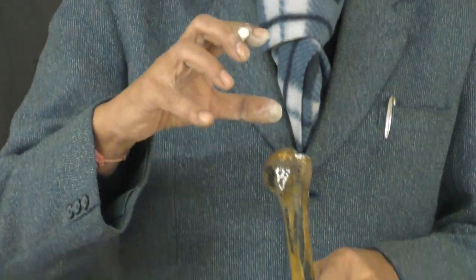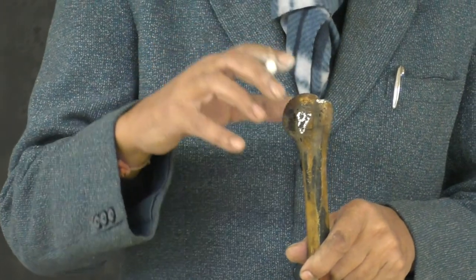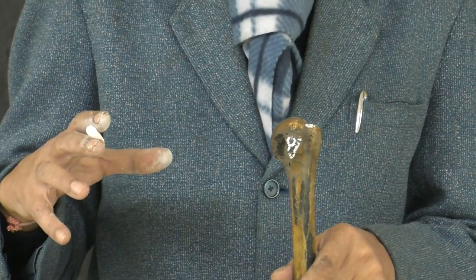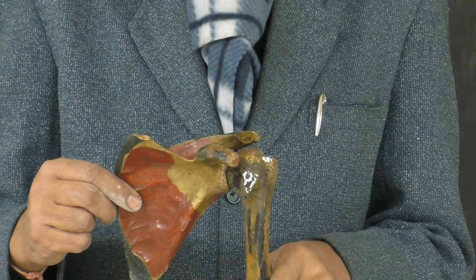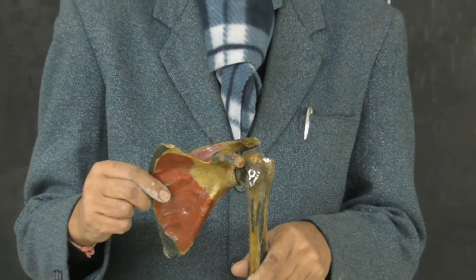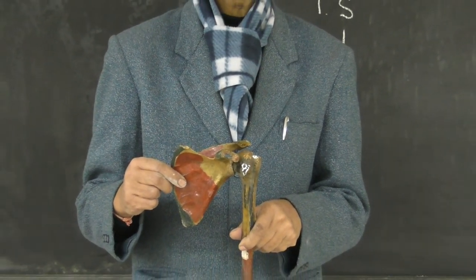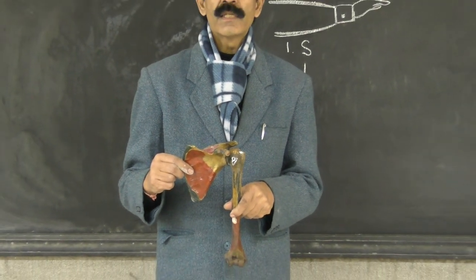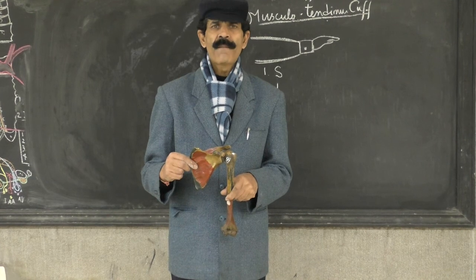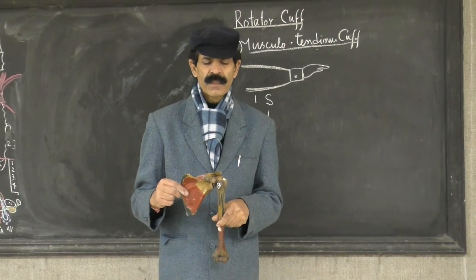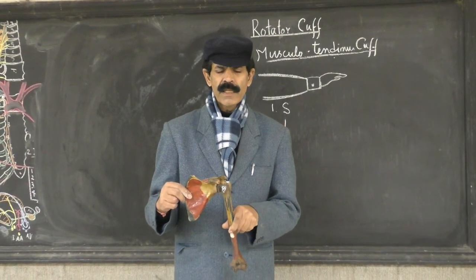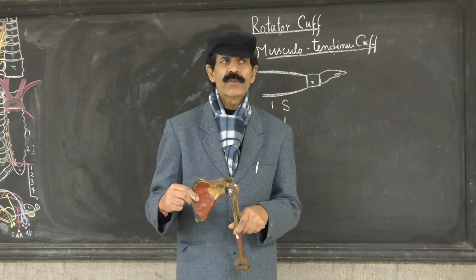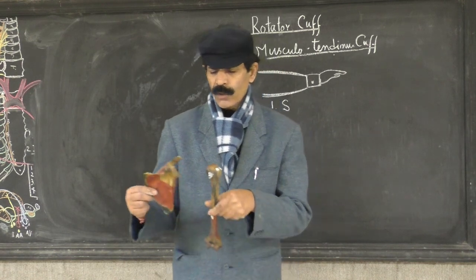These four muscles together form the musculotendinous cuff, also called the Rotator Cuff. Their origin is from a very large area of the scapula, but as they approach the insertion their tendons become aponeurotic and they almost fuse together — they glue together and form a narrow cuff-like structure around the fibrous capsule of the shoulder joint. They grip the shoulder joint and keep the head of the humerus in contact with the glenoid cavity in all rotational movements.